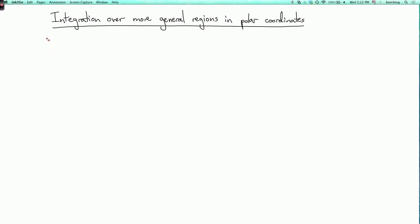We're now going to talk about integration over more general regions in polar coordinates. So let's consider the analog in polar coordinates of what we were calling a type 1 region.